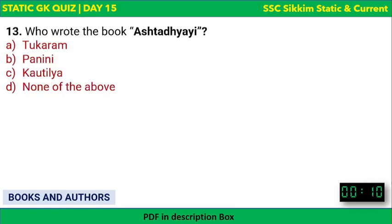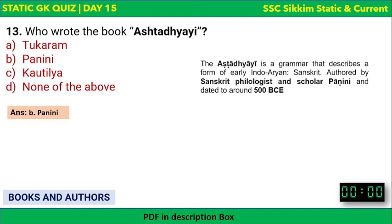Who wrote the book 'Ashtadhyayi'? The name means 'the eight chapters' — adhyay means chapters. The options are Tukaram, Panini, Kautilya, or none of the above. The correct answer is Panini, a Sanskrit philologist and scholar. The Ashtadhyayi is dated around 500 BC.